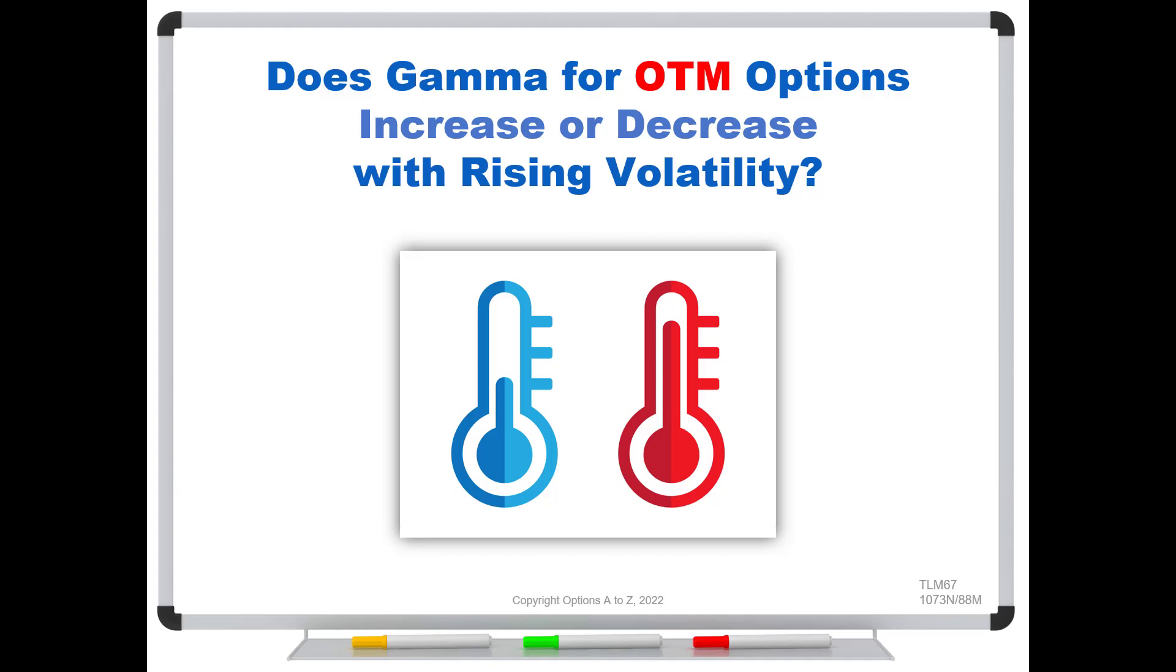And this is important because depending on what you think is going to be happening with the underlying stock, support and resistance levels, you might choose different strikes depending on where you'd like to locate that maximum gamma. So let's go take a closer look. Does gamma really continue to increase for out-of-the-money options?